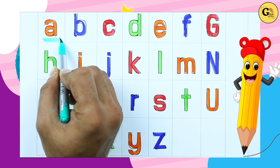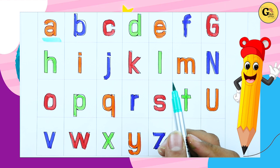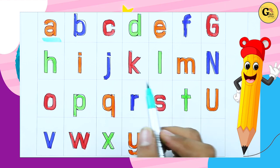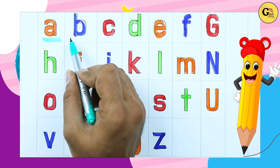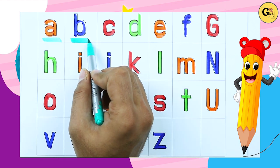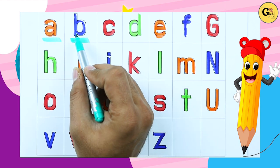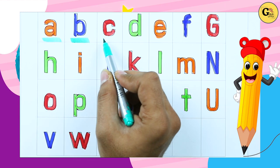It's small a. A for apple. B, B for ball.